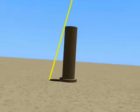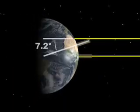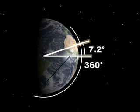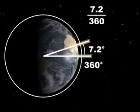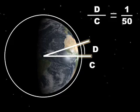This angle is equivalent to the angle between two lines drawn from Alexandria and Syene to the center of the Earth. There are 360 degrees in a circle, so 7.2 degrees is about 1/50th of the circumference of a circle, which means that the distance from Syene to Alexandria is about 1/50th of the circumference of the Earth.